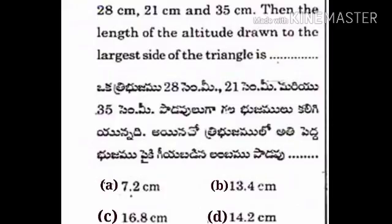A triangle has the length of the sides as 28 cm, 21 cm, and 35 cm. Then, the length of the altitude drawn to the largest side of the triangle is to be found.